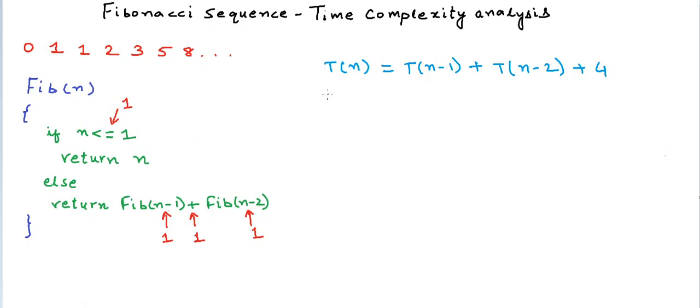If n is less than or equal to 1, which is the case for T(0) and T(1), we only have one simple operation, which is comparison. So the time taken is 1 unit.